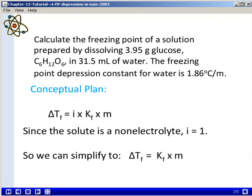Since the solute in this problem is a non-electrolyte, i is equal to 1. We can then simplify our equation to: the change in the freezing temperature equals Kf times m. Kf is the freezing point depression constant for the solvent, in this case water, and m is the molality of the solution in moles of solute per kilograms of solvent.